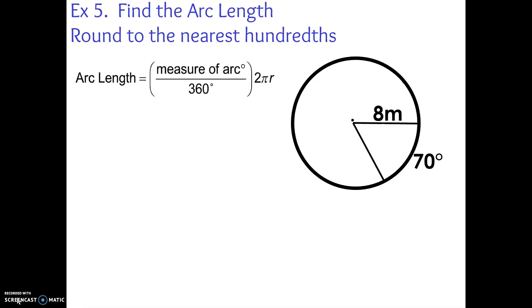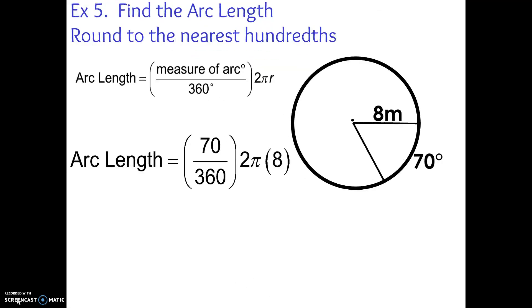Again, there is our formula. You can see by our example here, we have an angle of 70 degrees and we have a radius of 8 meters. So to find the length of that arc, I would plug this into our formula. Our angle is 70 degrees divided by 360 equals 2 times pi times 8.